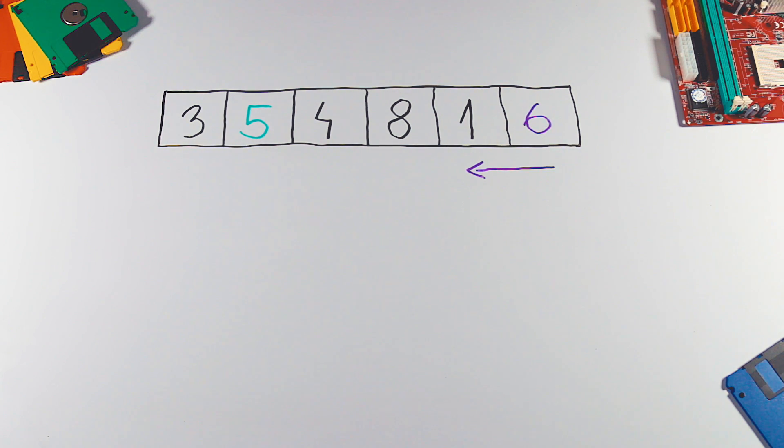This time if the element is bigger than pivot, we go to the next one. If it's smaller, we swap them. This goes on and on till we have compared all of the elements.